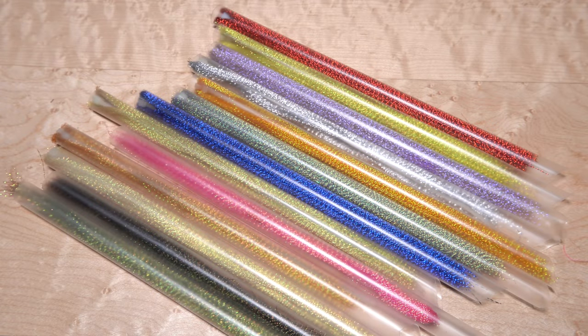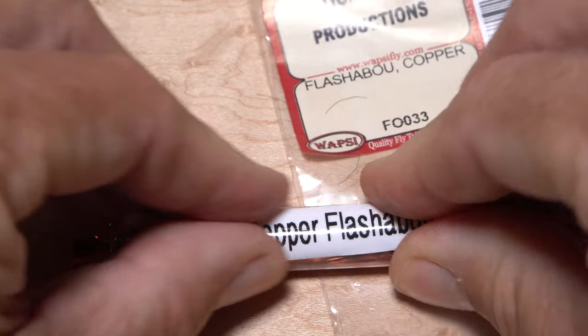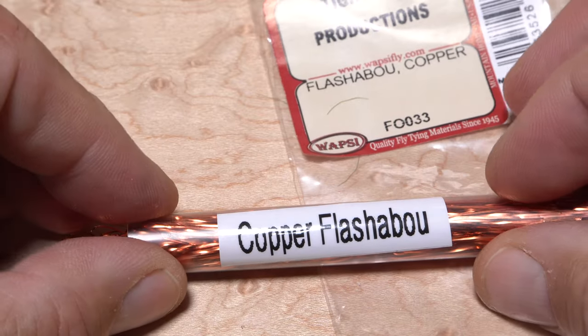The clear straws make color selection a breeze, and they fit perfectly in gallon-sized Ziploc storage bags. If you're inspired, the tubes are easily labeled with a permanent marker or a label maker.